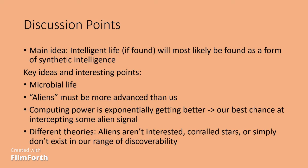There are a couple of other theories the speaker discusses briefly. First, the aliens may have already discovered us but are simply not interested because we are very primitive compared to them. Another way we could find aliens is by looking at corralled stars — since the universe expands and all stars will eventually die out, advanced aliens would try to corral those stars for energy. So where stars are being corralled is where the aliens might be. Or the aliens simply don't exist within our range of discoverability, which could also be true.